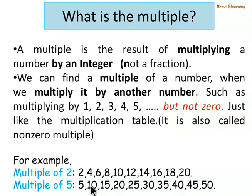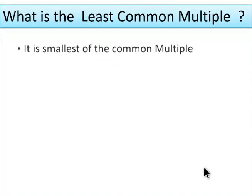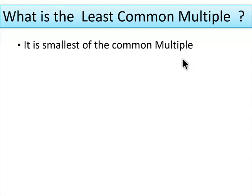Multiples of 5 are 5, 10, 15, 20, 25, 30, 35, 40, 45, and 50. What is the least common multiple? It is the smallest of the common multiples.